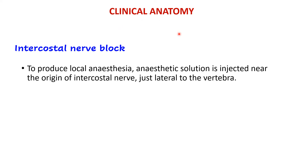Regarding clinical anatomy: if you need to produce local anesthesia over a part of the thoracic wall, the anesthetic solution is injected near the origin of the intercostal nerve, just lateral to the vertebra. This is where the intercostal nerve block is given, so that all branches will be affected.